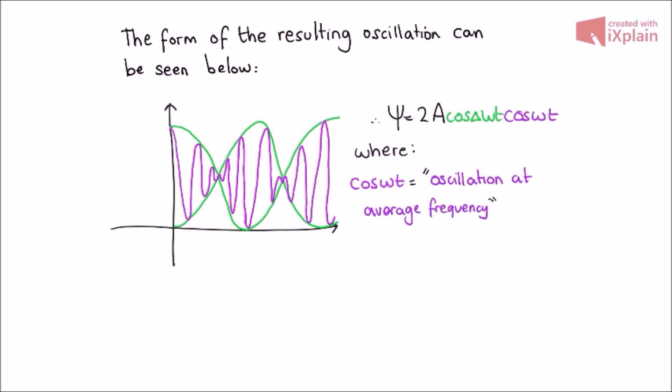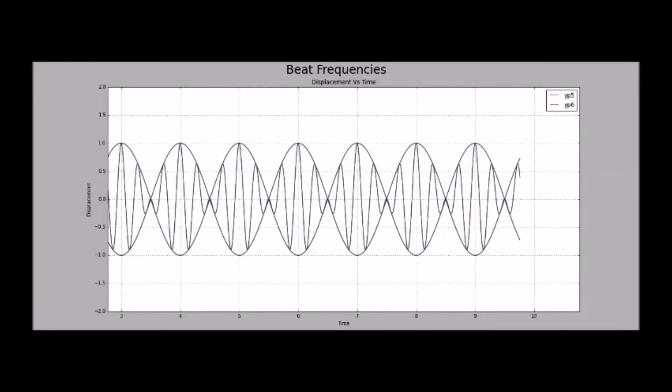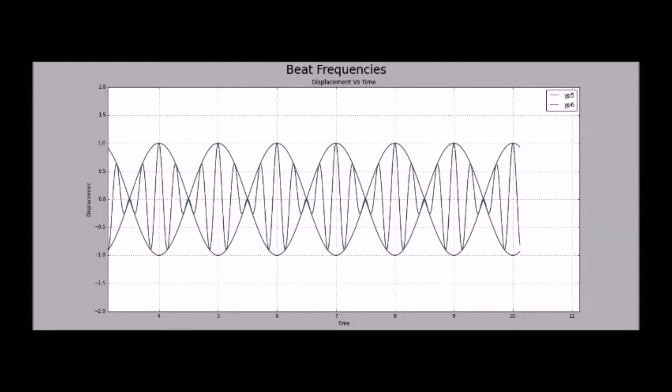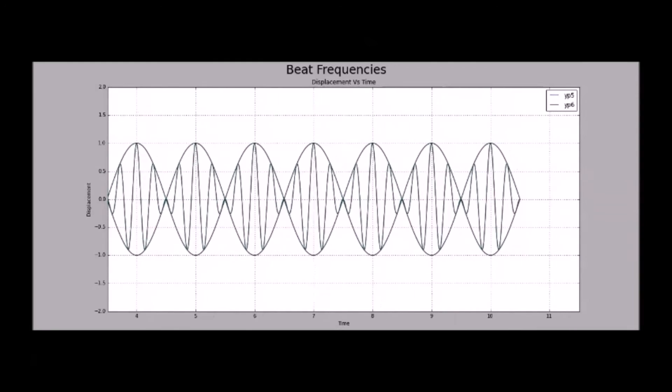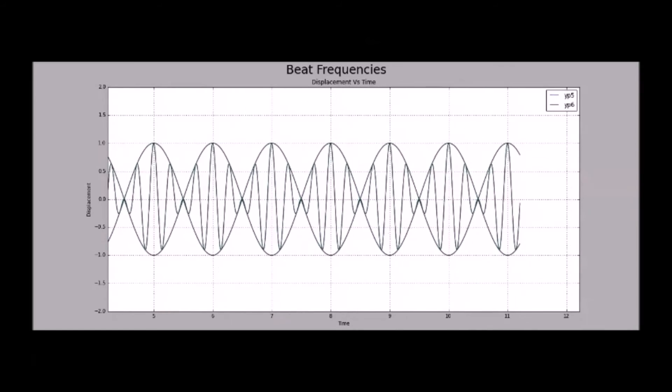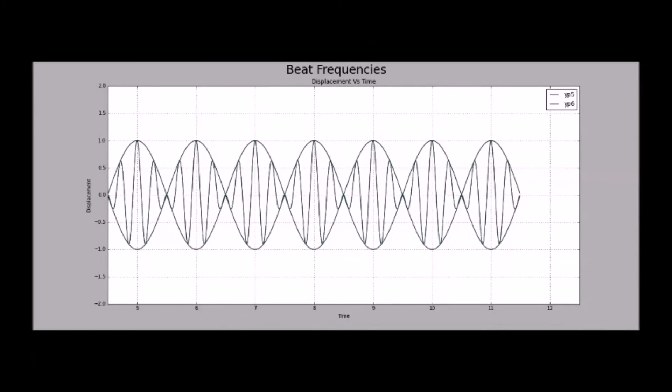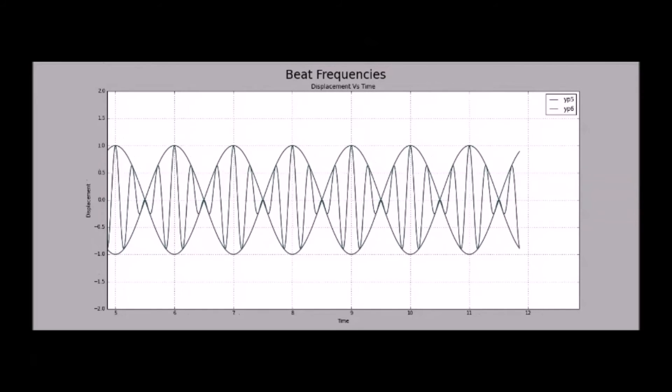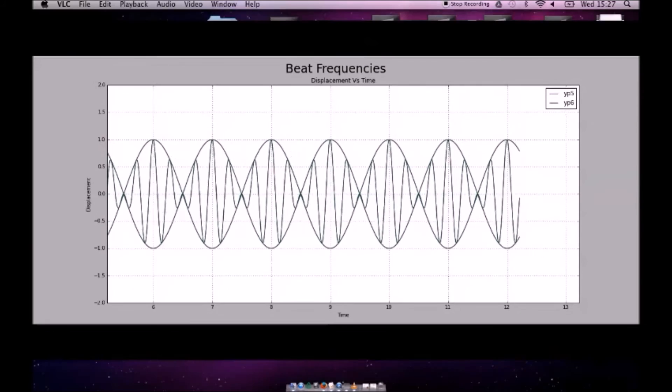So the amplitude of the sound is varying as a result of the envelope, and we see maxima where the sound is loudest, and minima where we will hear no sound at all. This explains why we heard points where we could hear such distinct changes in volume when the guitar was tuned, and the actual beat frequency is just the difference between the frequencies of the oscillation, so f1 minus f2.